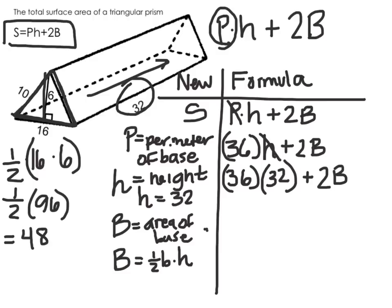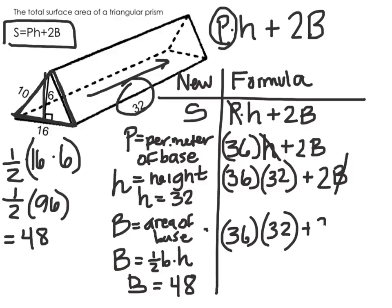So this capital B, in place of the capital B, I'm going to put a 48. I now have 36 times 32 plus 2 times the area of the base 48 equals my total surface area.